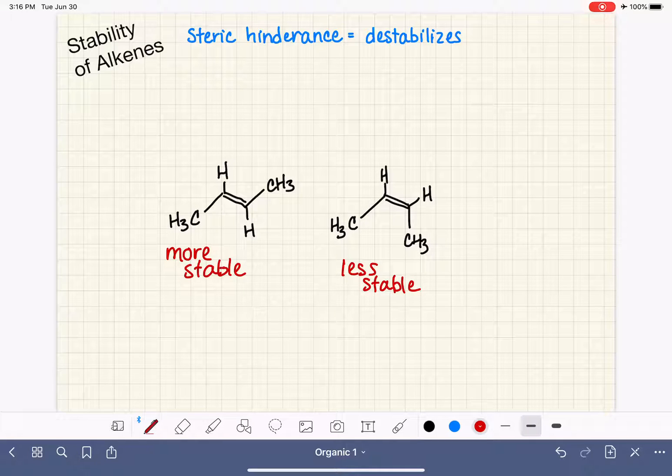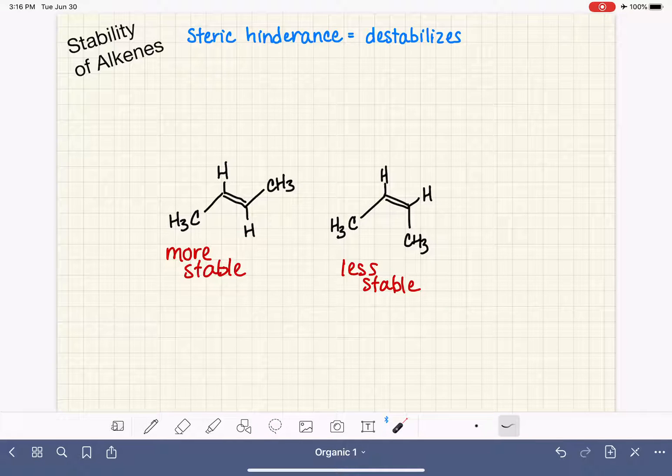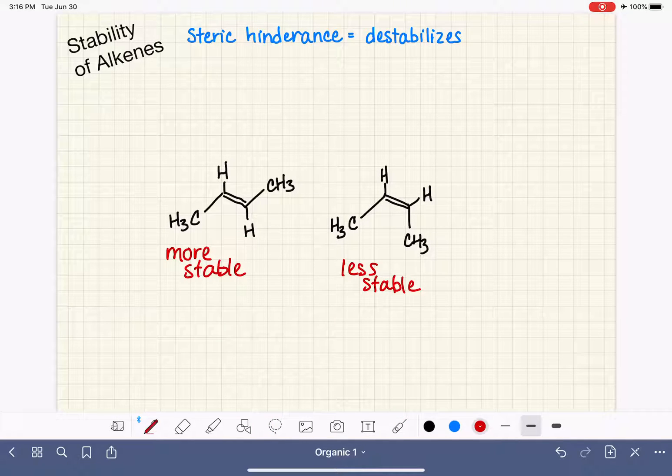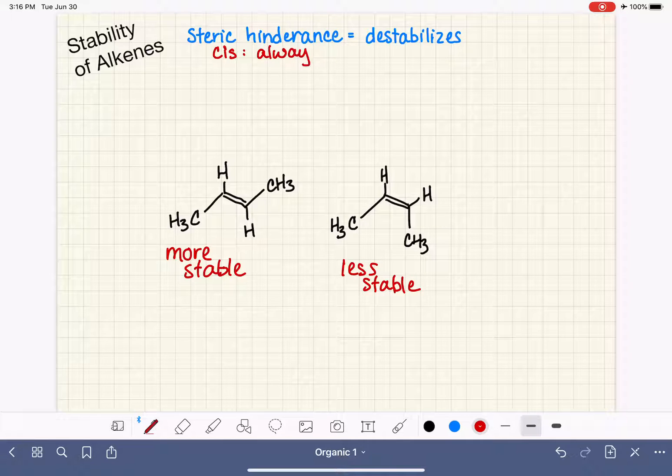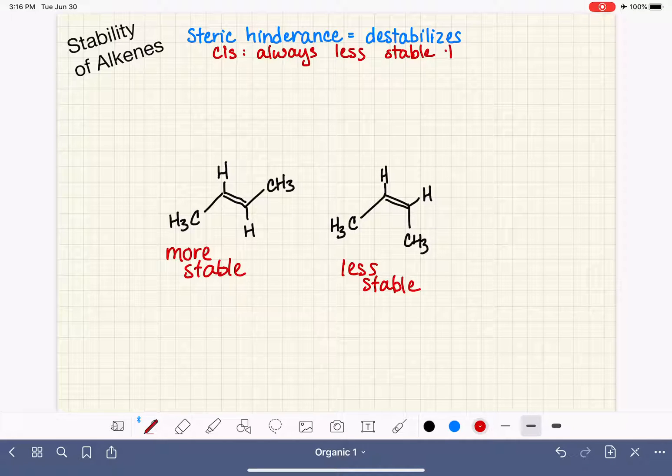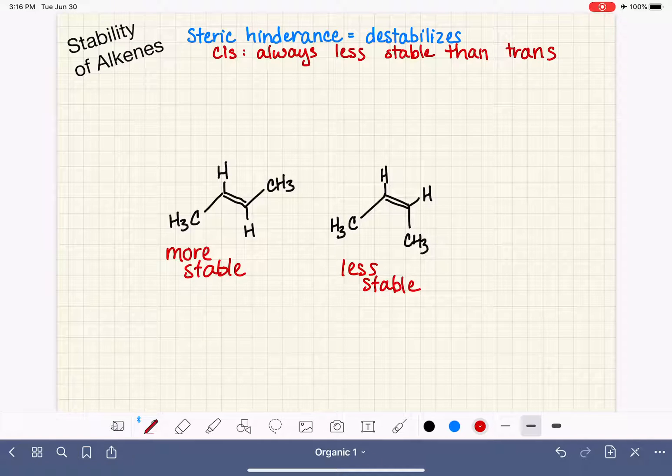When you have two alkenes and the only thing about them that's different is cis versus trans, this is the variable or the factor that you are going to consider. Cis is always less stable than trans. That's pretty easy, but unfortunately that's not everything we have to consider. Let's bring a couple more molecules into the mix.